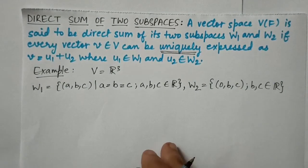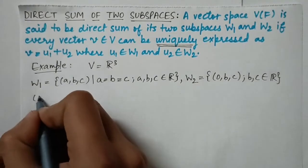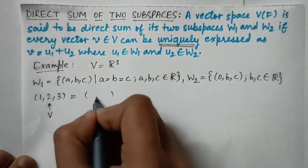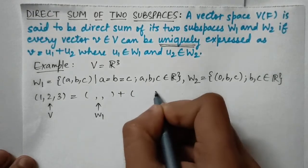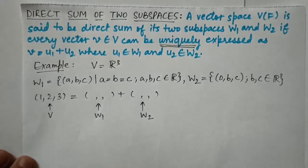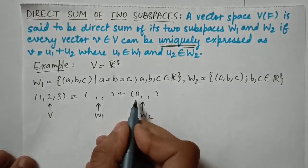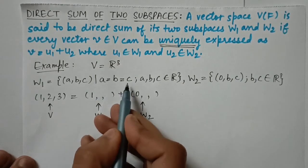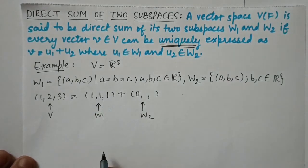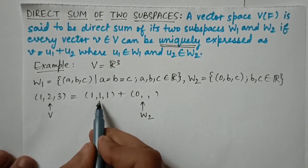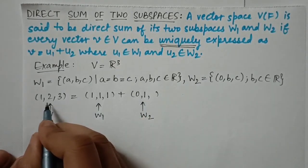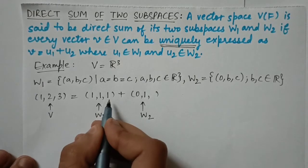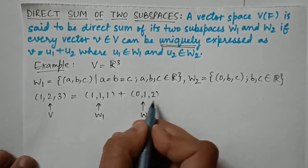Take the element (1, 2, 3) belonging to V, and write it as the sum of elements from W1 and W2. In W2 the first number is 0, so W1 must have 1 in the first position. Since a = b = c in W1, all three entries of W1's element are 1. Then W2's second entry must be 1 (since 1 + 1 = 2), and W2's third entry must be 2 (since 1 + 2 = 3).